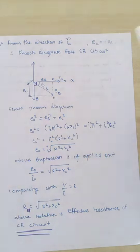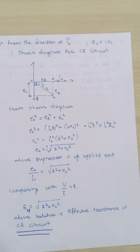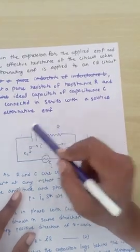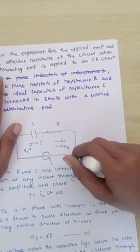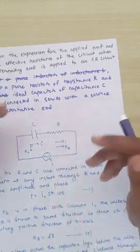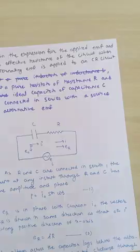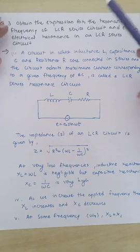The effective resistance of the CR circuit is √(R² + XC²). This can also be obtained from the general LCR impedance expression: if we set XL = 0 (no inductance), we get the CR result; if we set XC = 0 (no capacitance), we get the LR result. This connects both special cases to the general LCR formula.